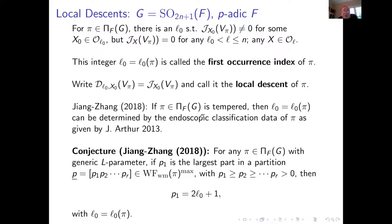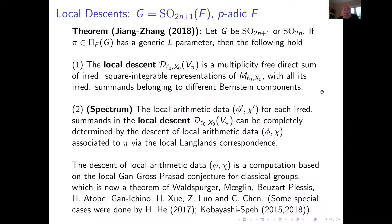We show that if Π is tempered or has a generic L-parameter, the first occurrence index can be determined by the endoscopic classification of Π. Our conjecture was that this first occurrence index is completely determined by the wavefront set — specifically by the largest partition. This is what we proved with Lei Zhang in 2018. We wrote the paper for orthogonal groups, and the same holds for unitary groups.